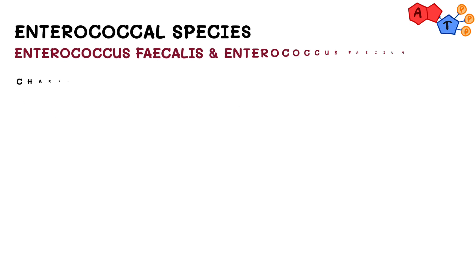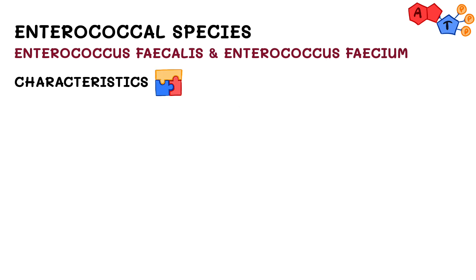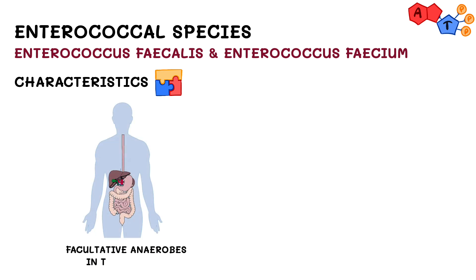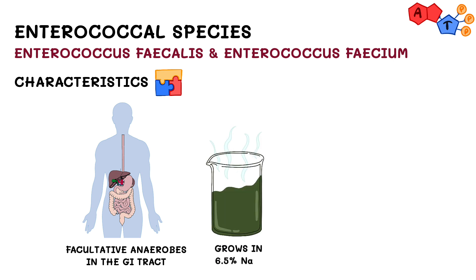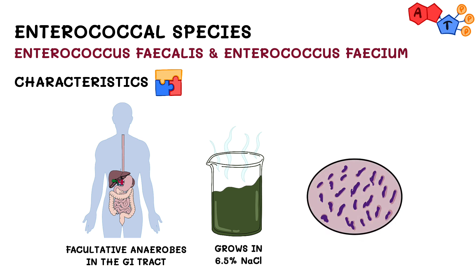The common features of enterococcus faecalis and enterococcus faecium are that they're both facultative anaerobes found in the GI tract. Since they are enterococcal, we know that they grow in 6.5% sodium chloride, and the gram stain appearance is described as diplococci in a chain-like arrangement.